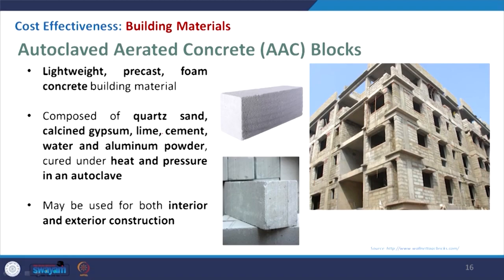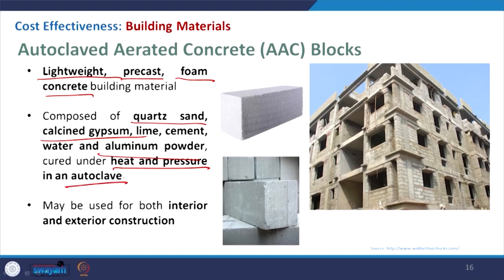Coming to autoclaved aerated concrete (AAC) blocks. This is lightweight compared to a concrete block of similar size. It is composed of coarse sand, calcined gypsum, lime, cement, water, and aluminium powder, and it is cured under heat and pressure in an autoclave — that is where the name comes from. It can be used as an external wall or also internally. As you can see in this slide, within an RC frame these blocks are being used because they are light, easy for the workman to handle, and a few layers can make a full wall.